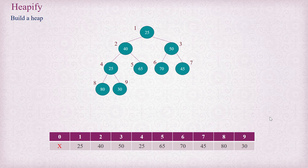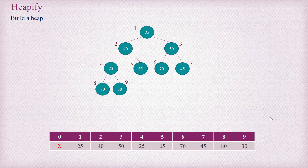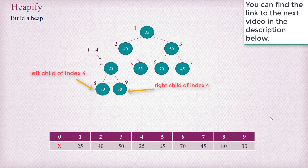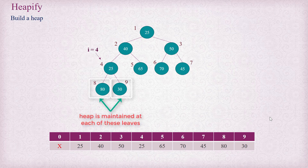So now, from index n divided by 2 up to index 1, we cannot say that a heap is rooted at these indices. However, for index 4, you can see that a heap is maintained at its left child at index 8 and also at its right child at index 9, because they are leaves. So we just make a call to the adjust operation to adjust index 4, so that a max heap is maintained at index 4. The adjust operation adjusts a particular index if its left child is a heap and its right child is a heap, then adjust can make that index a heap. So on calling adjust, it will make a heap at index 4.